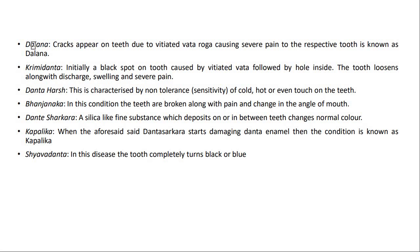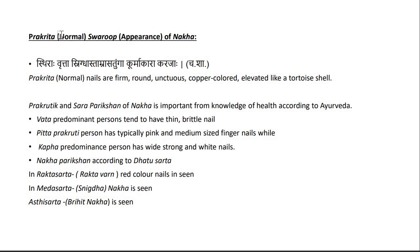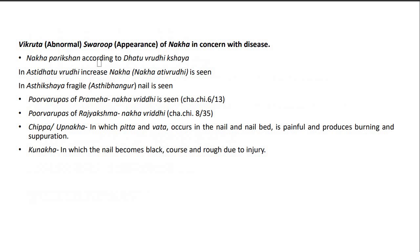The diseases related to Dant include Dalana, Kromi Danta, Danta Harsha, Bhanjanak, Danta Sharkara, Kapalika, and Shyava Danta. The normal Swaroop of Dant is described according to Prakruti and Sara Pariksha. Similarly, the Swaroop of Nakha and its Vruddhi and Kshaya are related to Asthidhatu Vruddhi and Kshaya, as we have studied, and these are connected to Nakha-related diseases.